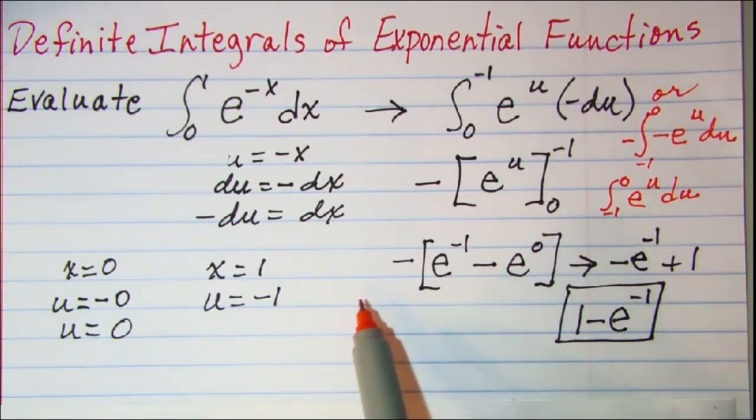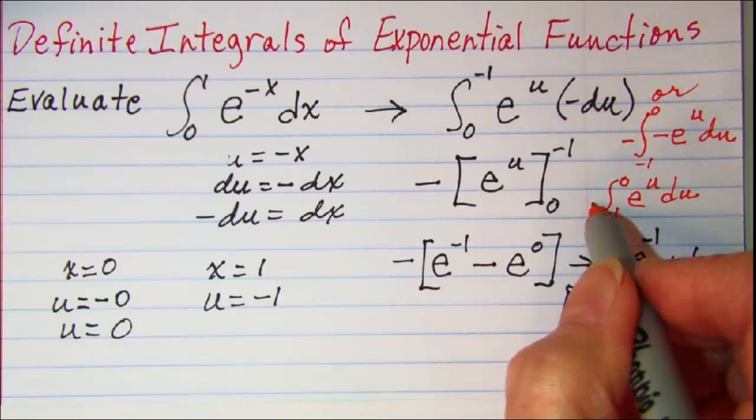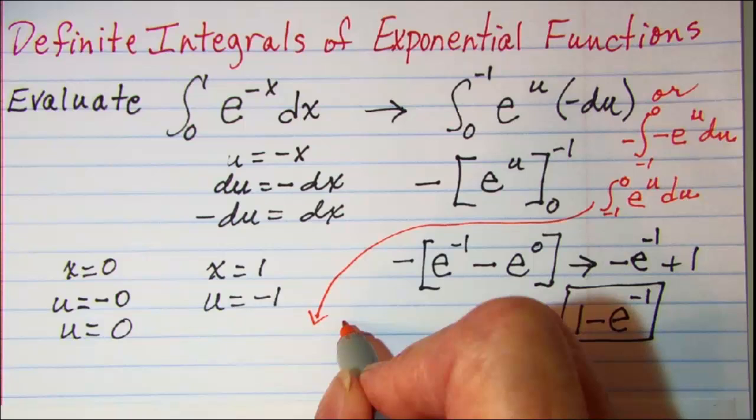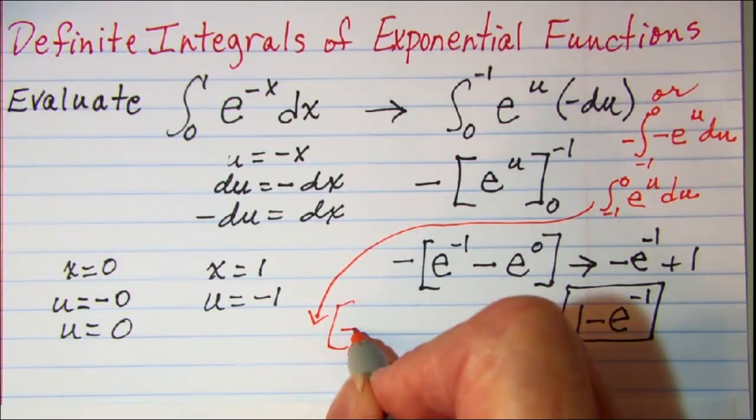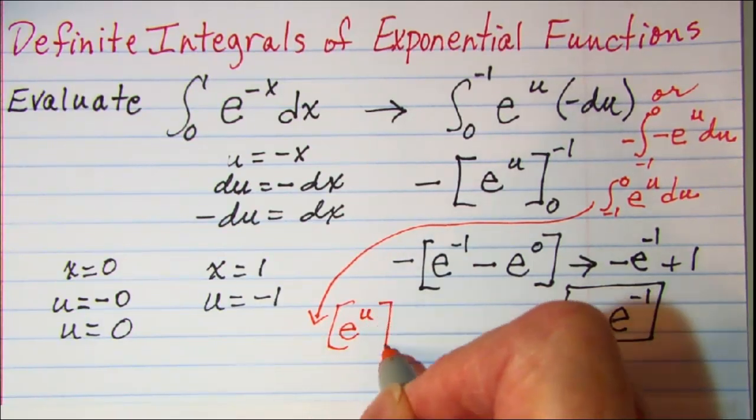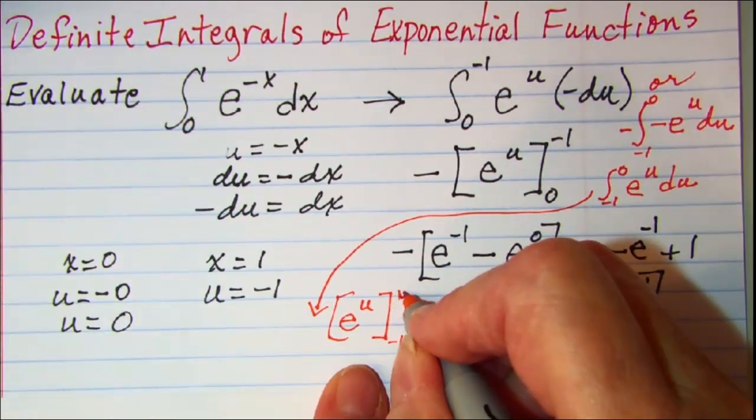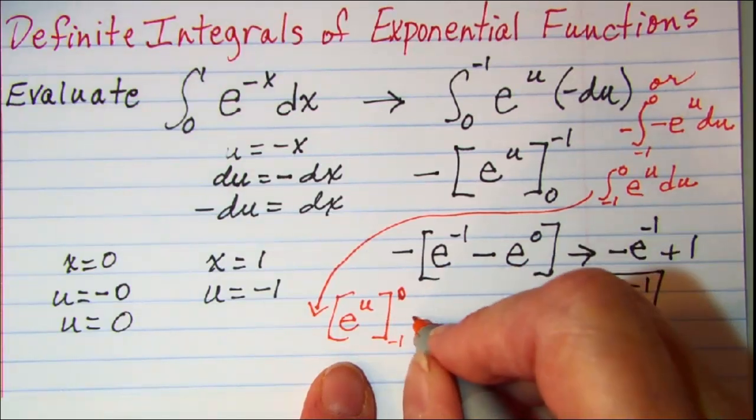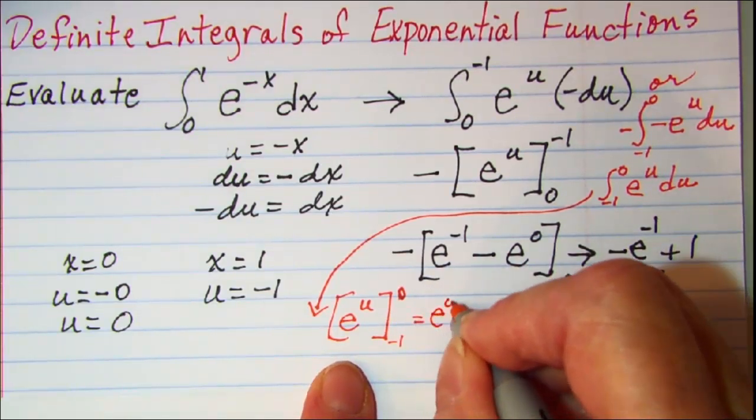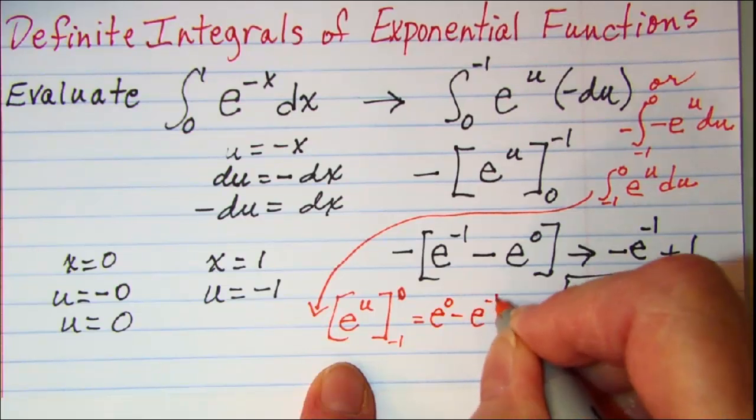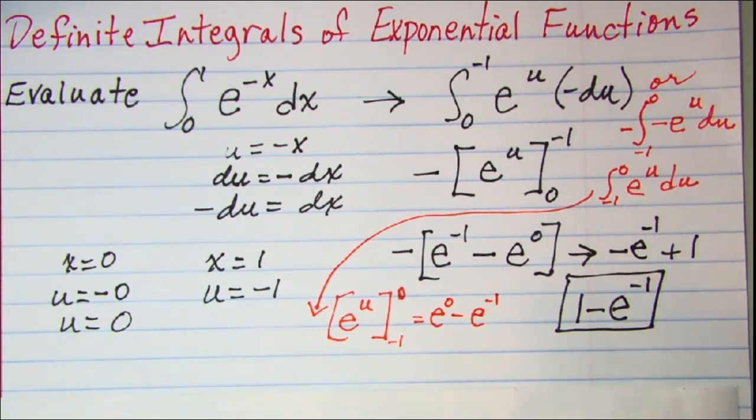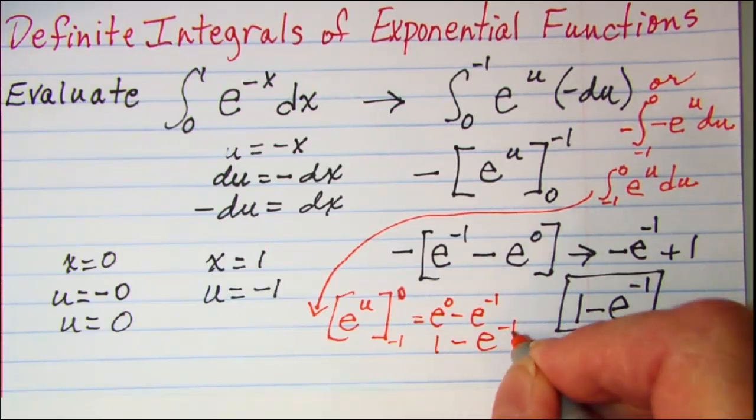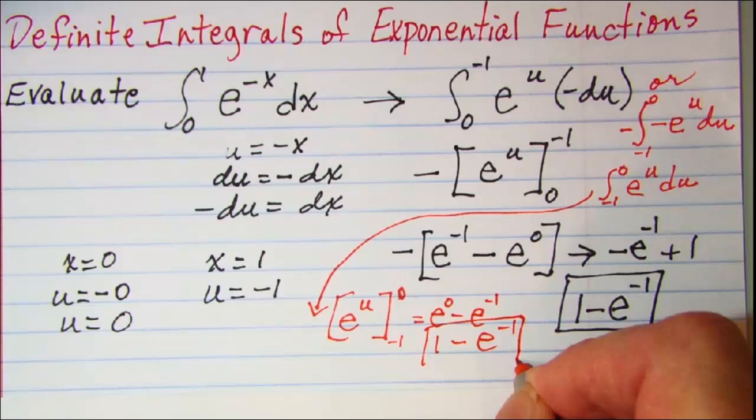Let me bring this over here. So this is e to the u from negative 1 to 0. If we put our 0 in first, this is e to the 0 minus e to the negative 1, which is 1 minus e to the negative 1. So either way we do it, we get the same answer.